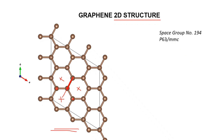If we consider the alternate atoms — the next nearest neighbor — let's see what happens. This is the distance, and on the other side we can find another carbon atom. Similarly, considering another next nearest neighbor, we find another carbon atom on the opposite side. Again, on the opposite side of this atom, we find this atom.